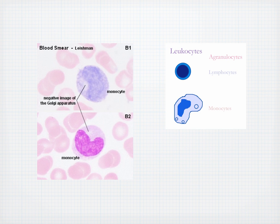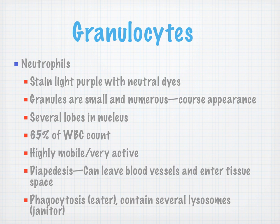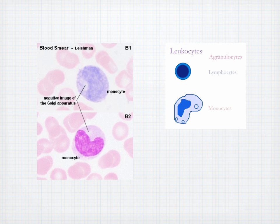Agranulocytes — lymphocytes and monocytes — don't have granules in their cytoplasm. Neutrophils stain light purple with neutral dyes. Their granules are small, numerous, and very coarse in appearance, with several lobes in the nucleus. They comprise 65% of your white blood count. Highly mobile and very active, they can diapedese — leave the blood vessels and enter the tissue space. They can also perform phagocytosis, contain several lysosomes, and eat and clean up things in the body.